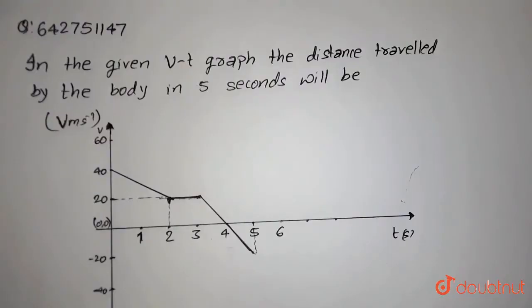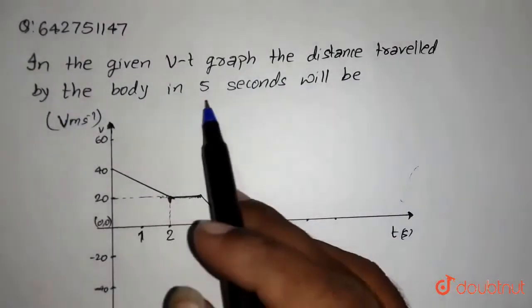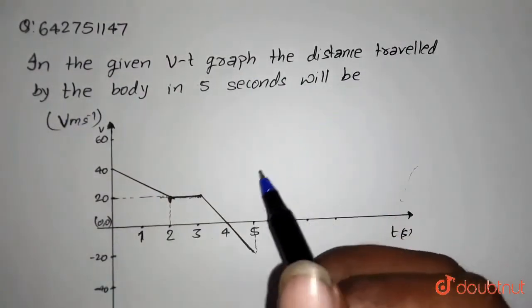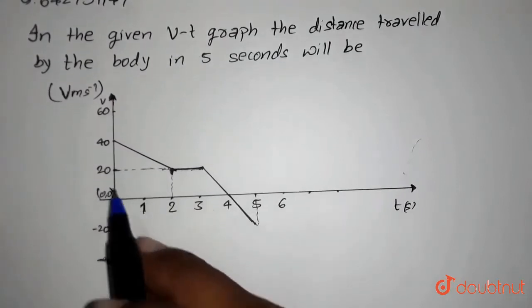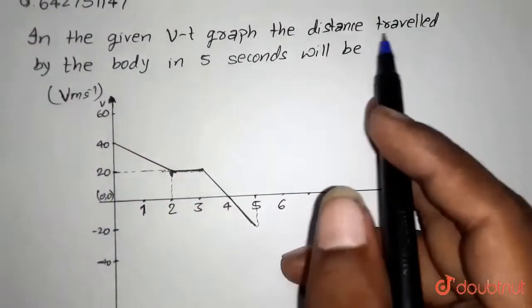Hello students, so here we have the question. In the given velocity-time graph, the distance traveled by the body in five seconds will be. So this is the graph and it is given velocity and time graph. So we need to find the distance traveled by the body.